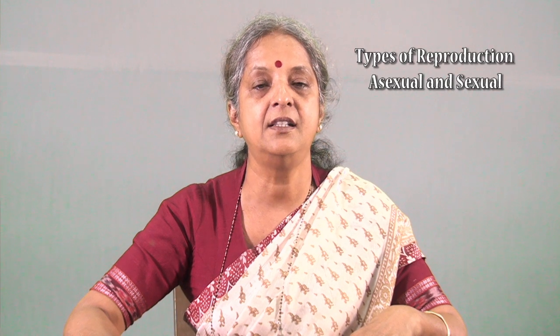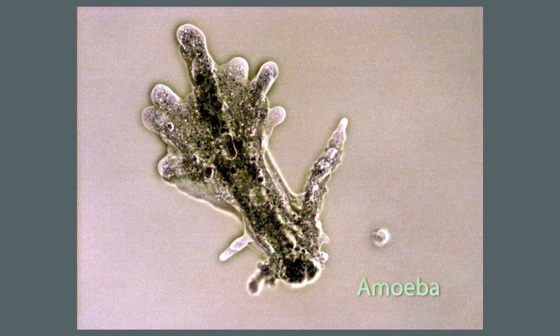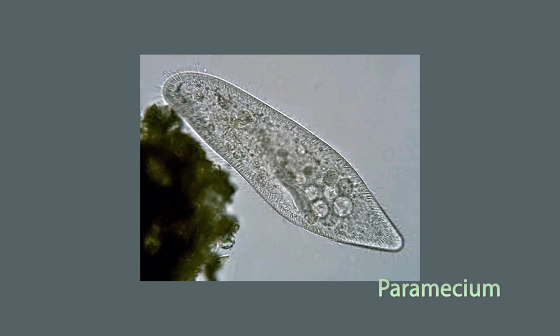Animals reproducing asexually do not have separate sexes. That is, all individuals can reproduce. Examples include amoeba, paramecium, etc.